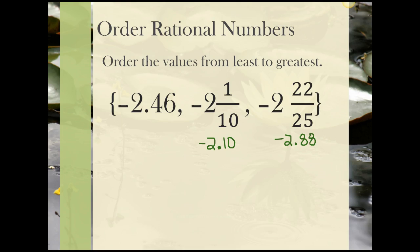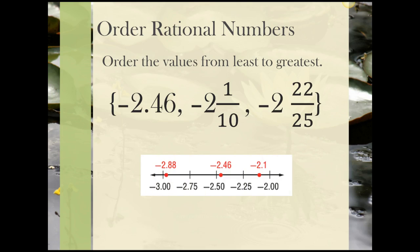Since these are negative values, I kind of have to think in reverse. A number line can be a handy tool. If we plot all three values on a number line, we can see that -2.88 is the smallest, and -2.1 is the greatest. The final answer would be -2 22/25, followed by -2.46, and finally, -2 1/10.